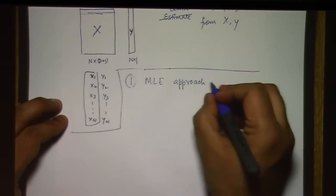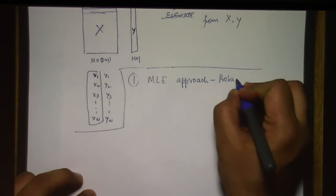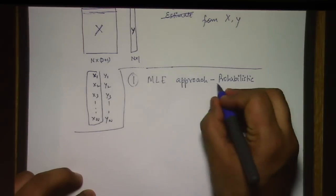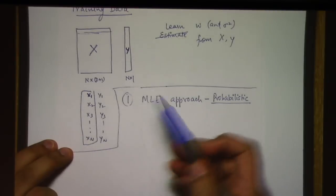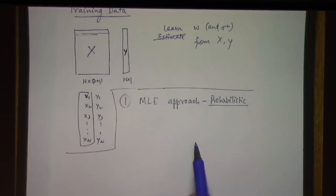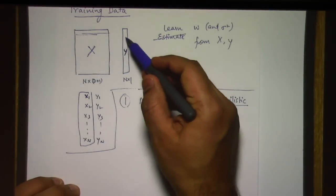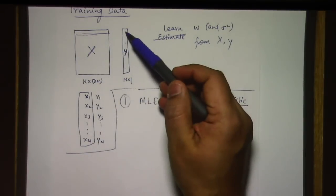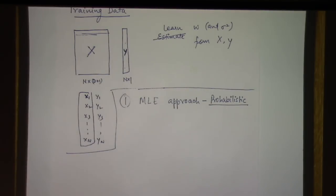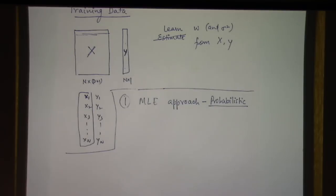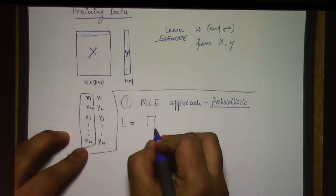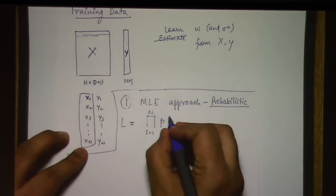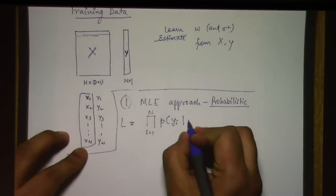In the probabilistic interpretation, y is a Gaussian random variable. We compute the likelihood of the training data as a function of w and sigma squared, then maximize that likelihood to get our estimates. The likelihood is the product over all data points of the pdf of each y_i given those parameters. Importantly, we only assume y is a random variable — x is not.